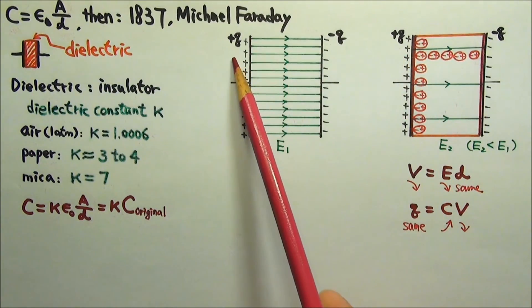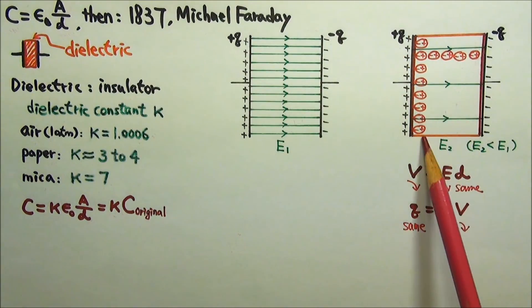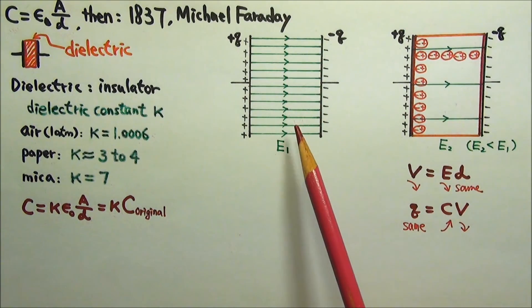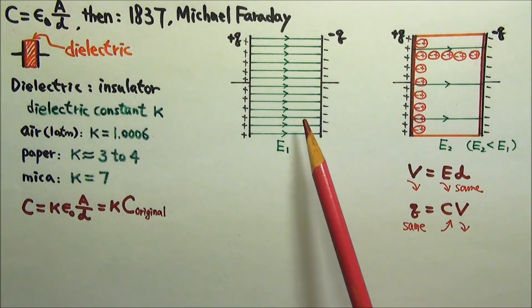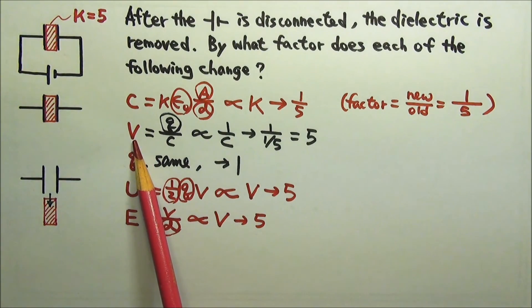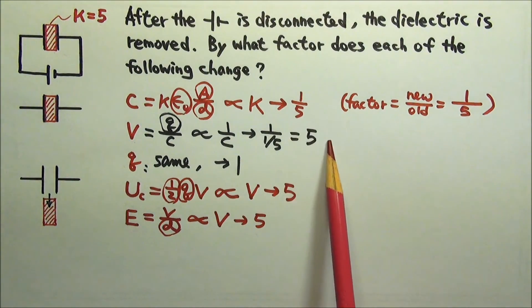Without changing the charges on the capacitor, removing the polarized molecules of the dielectric material causes the electric field between the plates to be stronger. So the field gets stronger and the v equals ed also increases.